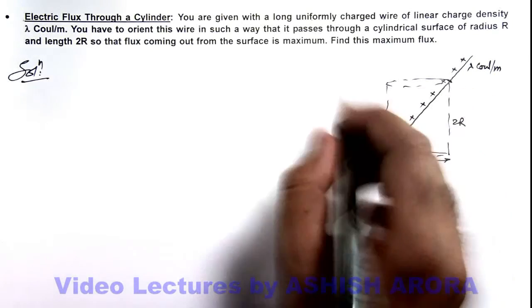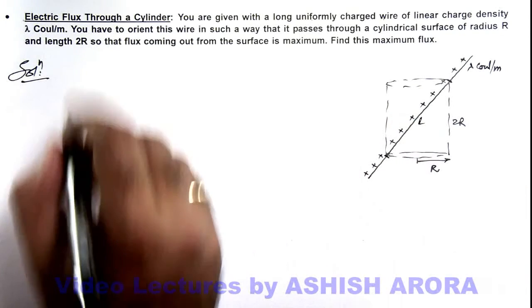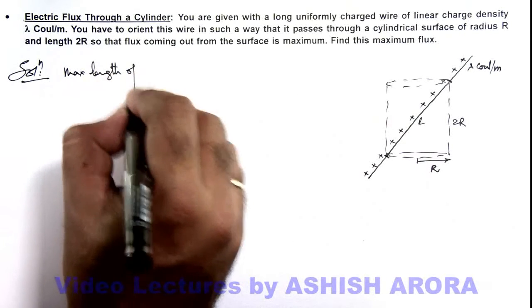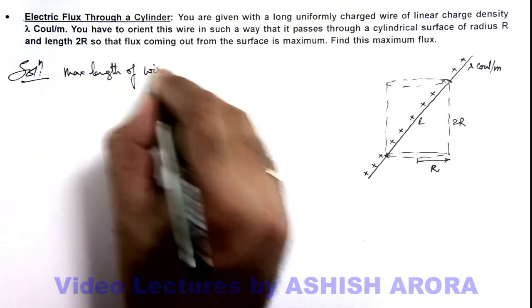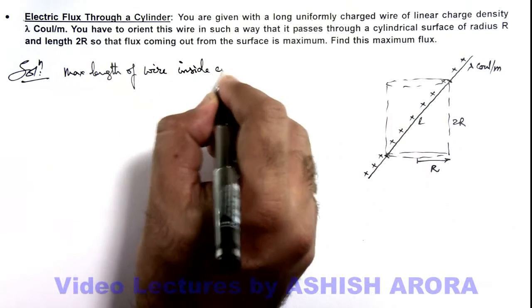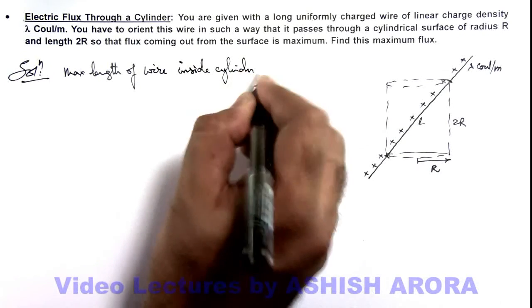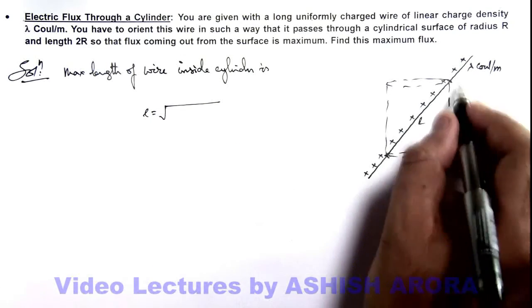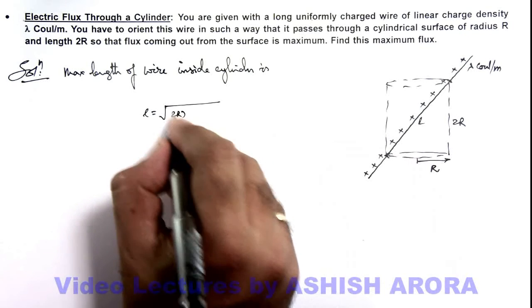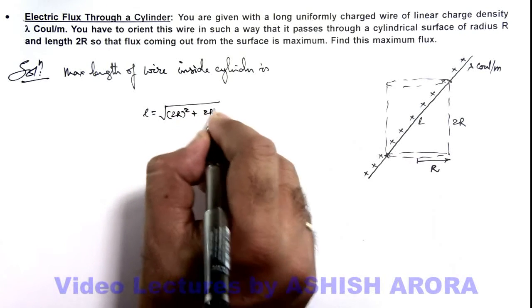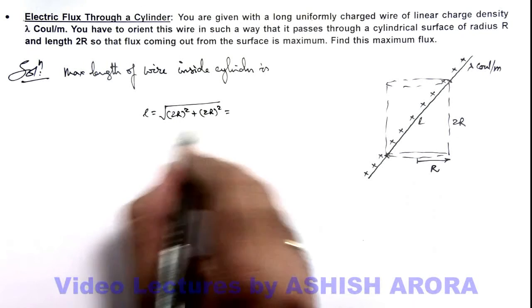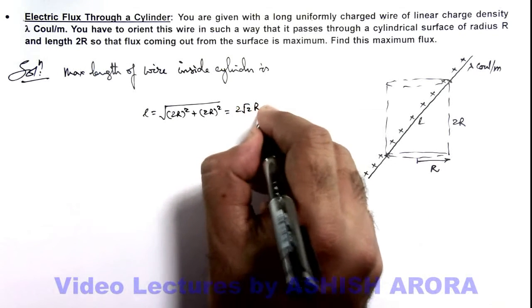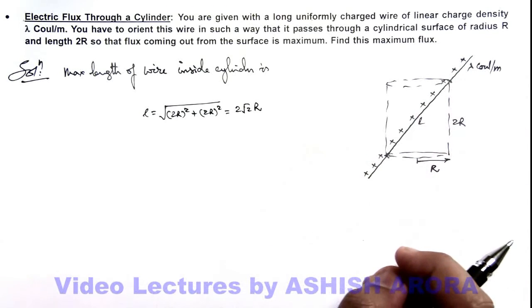We can calculate if this length is L. So we can write maximum length of wire inside cylinder is, this length we can write as root of 2R square plus 2R square, so that'll be 8R square, so this'll be 2 root 2 R. So this is the maximum length which is contained within this cylinder.